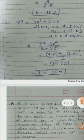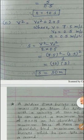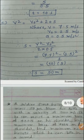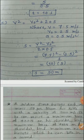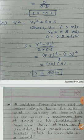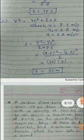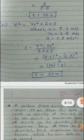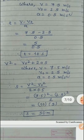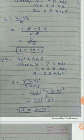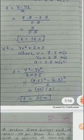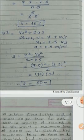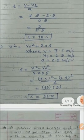For part c, find the distance. Using v square = v0 square plus 2 a s. Here v = 7.5 m/s, v0 = 2.5 m/s, a = 0.5 m/s². Therefore s = (v square minus v0 square) divided by (2 into 0.5) = (7.5² minus 2.5²) divided by 1 = (56.25 minus 6.25) = 50 meter.